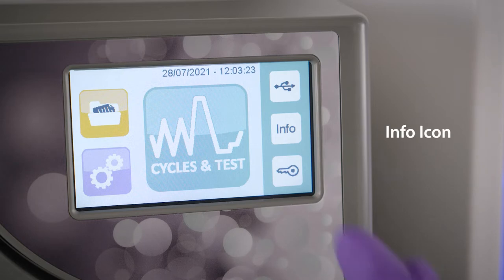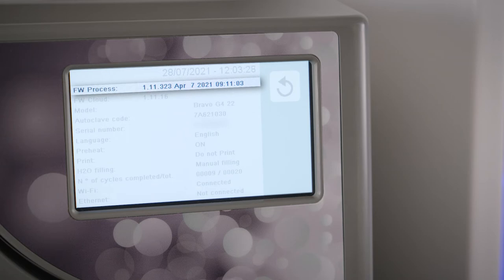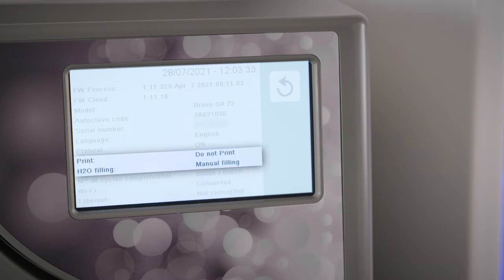The Info icon provides detailed information about your unit, such as the current firmware version, serial number, language, cycle count, connectivity status, and devices connected to the unit.